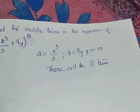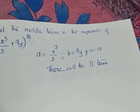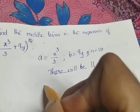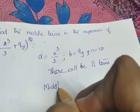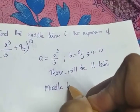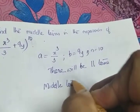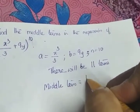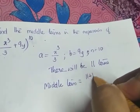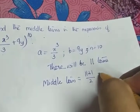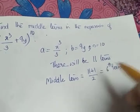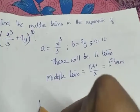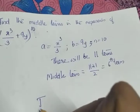The middle term will be the (11+1)/2 = 6th term. So the question is to find the sixth term, T6.